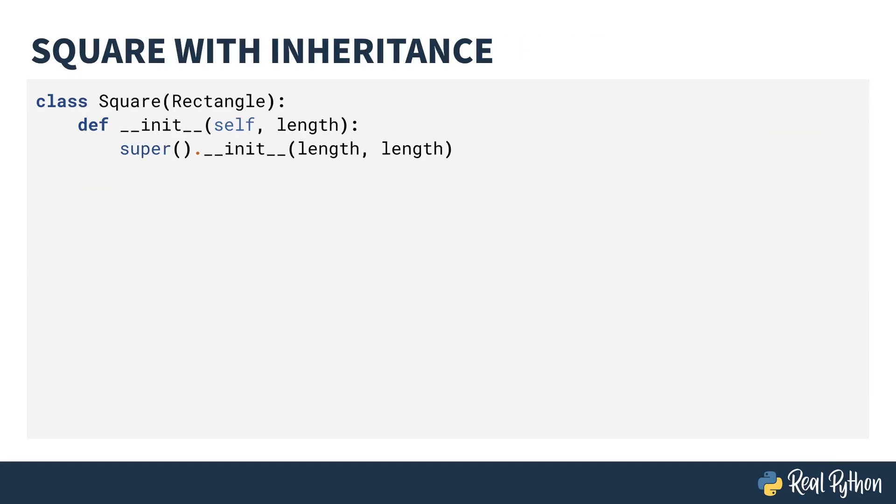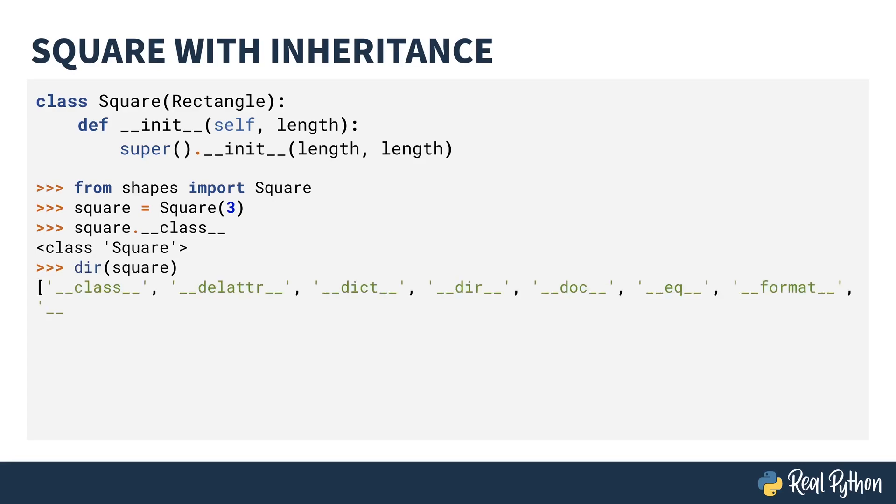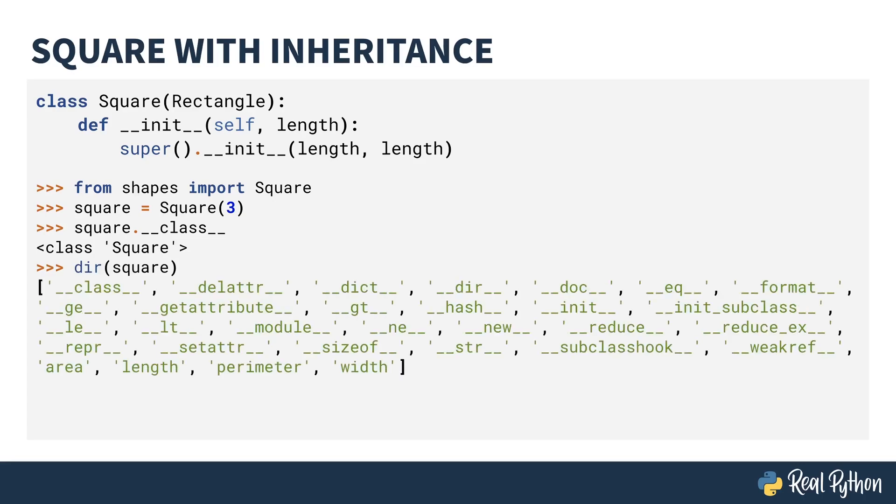Inside of shapes.py, I've replaced the old square definition with this new inherited code. Like before, I can use the REPL and import the square, instantiate it with a length of 3. If I look at the class, not surprisingly, it's a square. If I look at the dir of the object, you'll see a few new things. For starters, at the bottom, the width, perimeter, length, and area are all there. The area, perimeter, and width are inherited from the rectangle class. The length is passed in in the constructor.